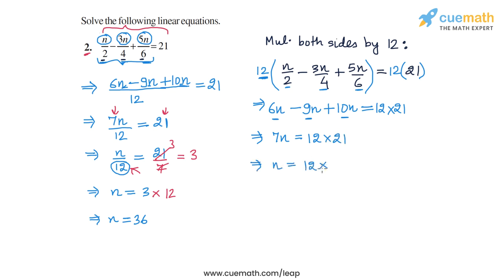So we will get 12 into 21 divided by 7. And 21 by 7 is 3. And 12 into 3 is 36. So once again, we obtain the same answer that n is equal to 36.